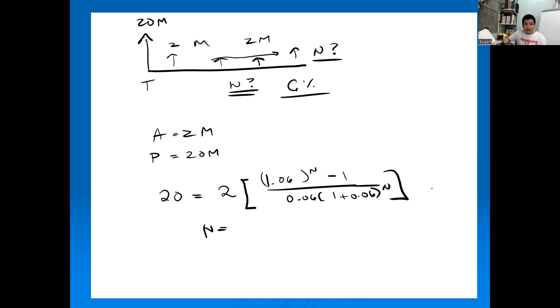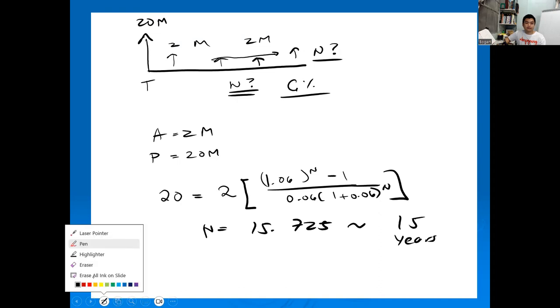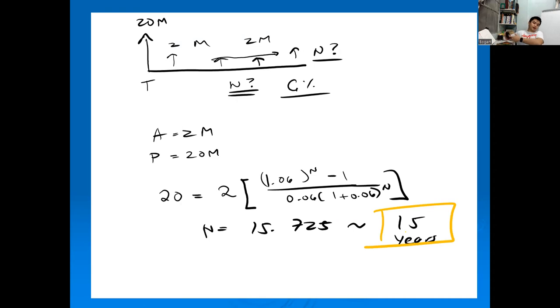Solving gives N equals 15.725 years, approximately 15 years. So in 15 years, the money will be depleted as he distributes it.